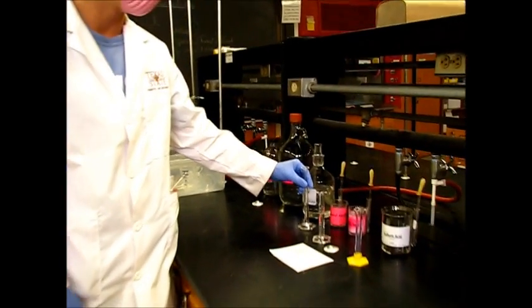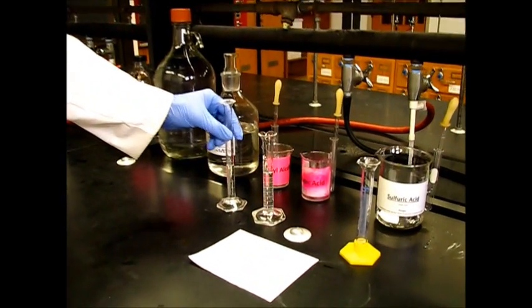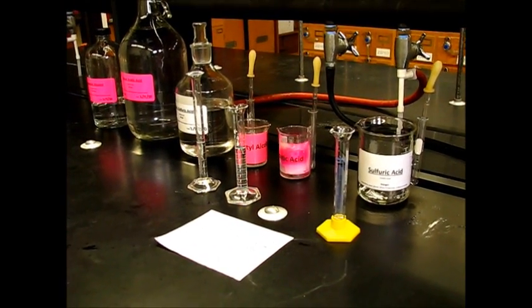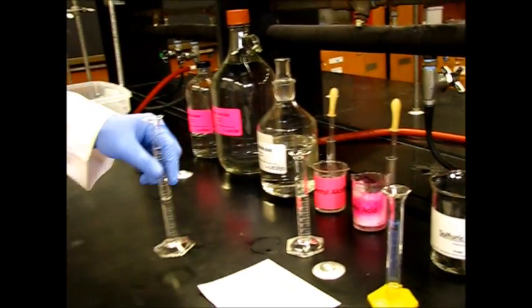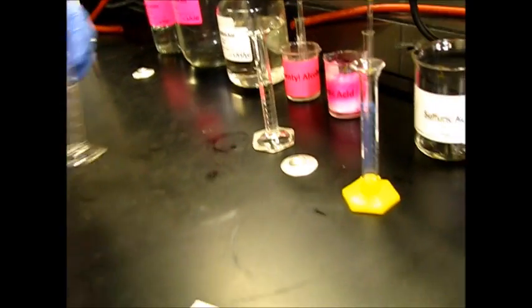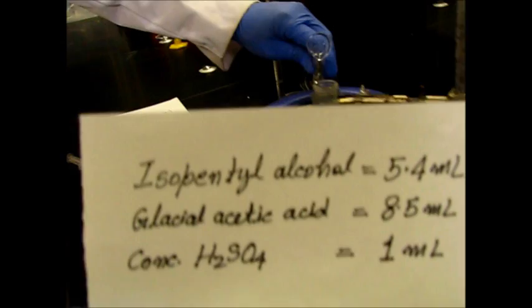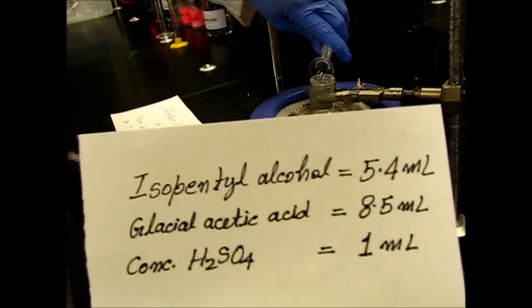So here we have measured out 5.4 milliliters of the isopentyl alcohol, 8.5 milliliters of the glacial acetic acid, and one milliliter of the concentrated sulfuric acid. So we're going to go ahead and combine everything in this round bottom flask. We already have two boiling stones in there. Those will be important once we start the reflux.